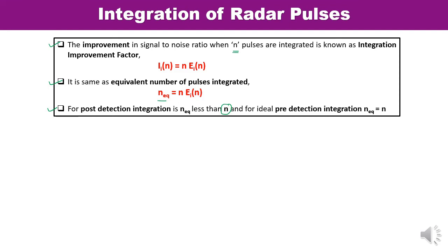For the same integrated SNR, post-detection integration requires more pulses than pre-detection, assuming the signal-to-noise ratio per pulse is the same in both cases. When a large number of pulses are integrated — meaning the SNR per pulse is small — the difference between pre-detection and post-detection becomes significant and very high.